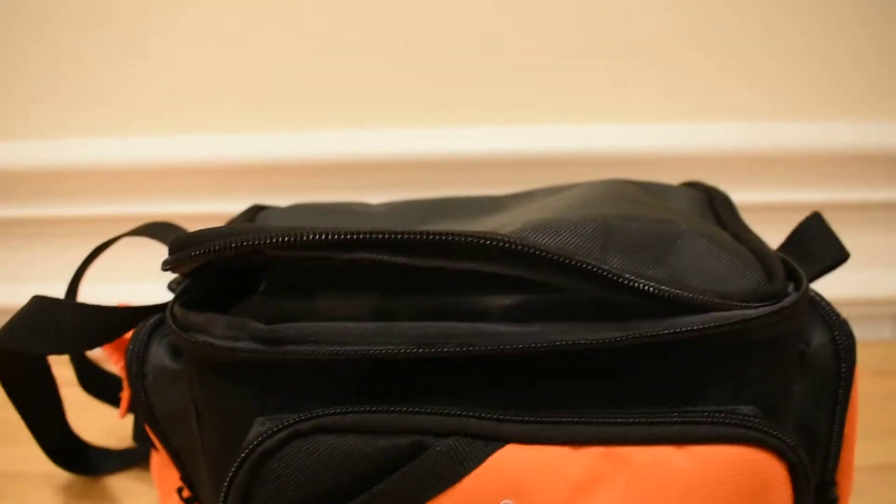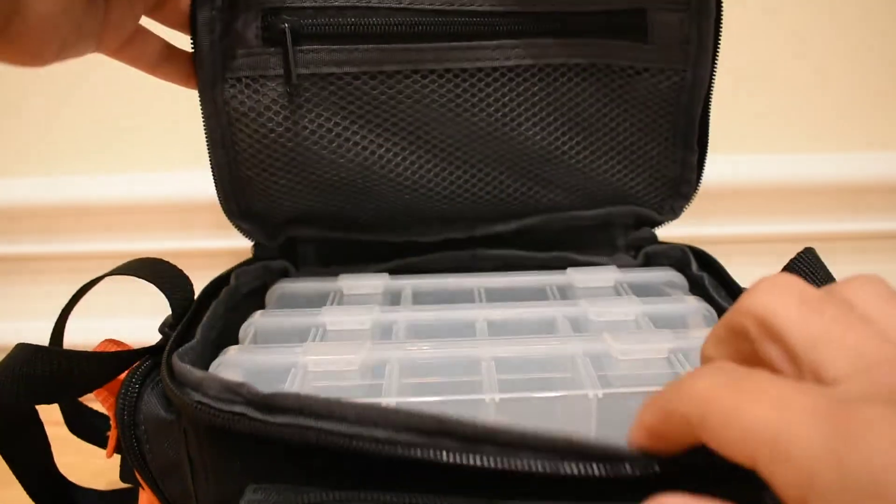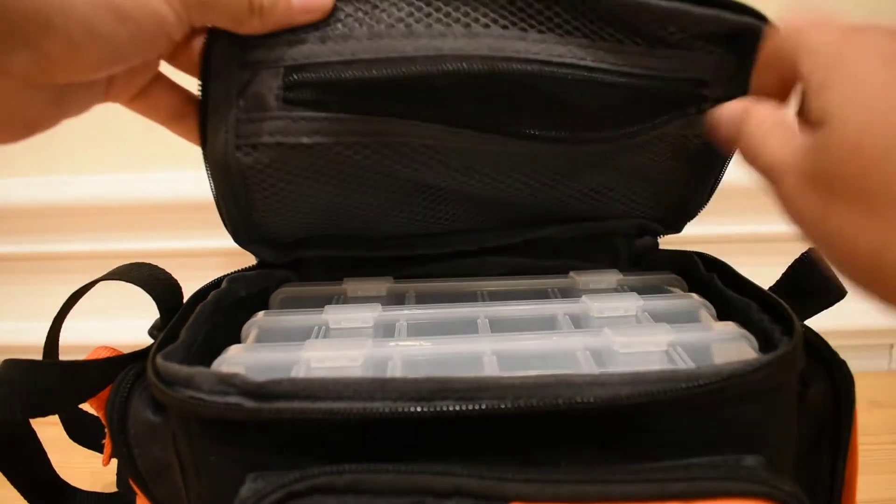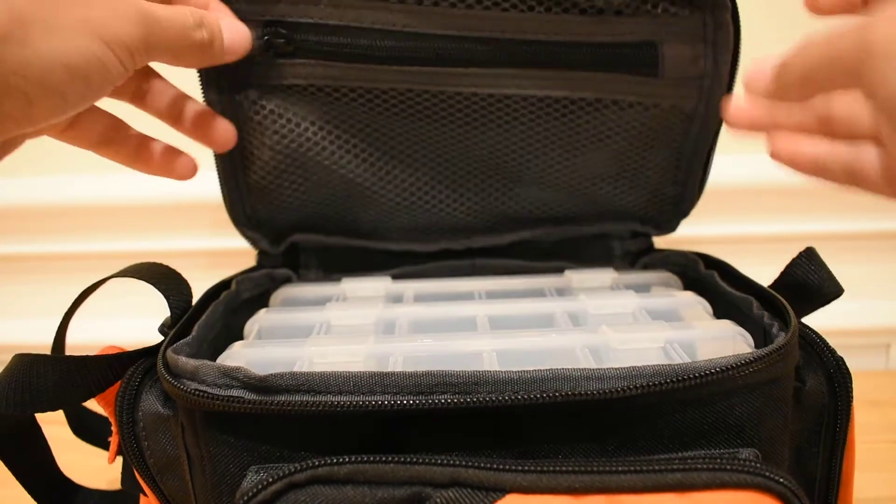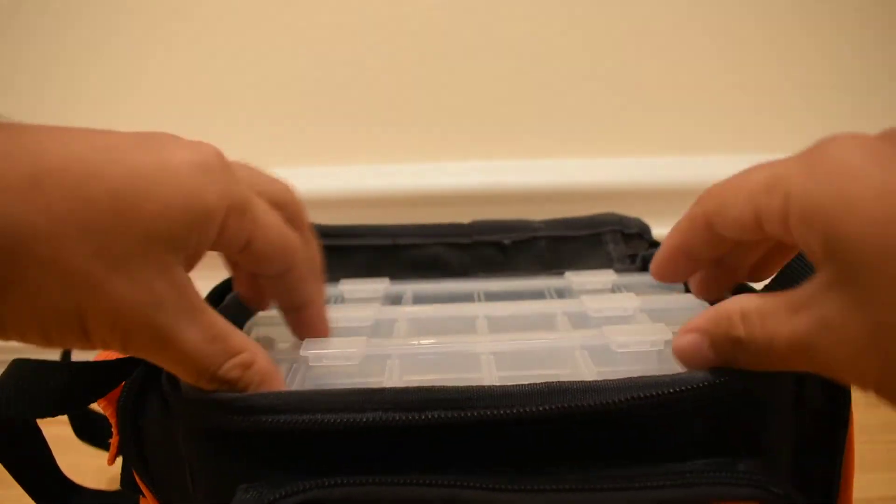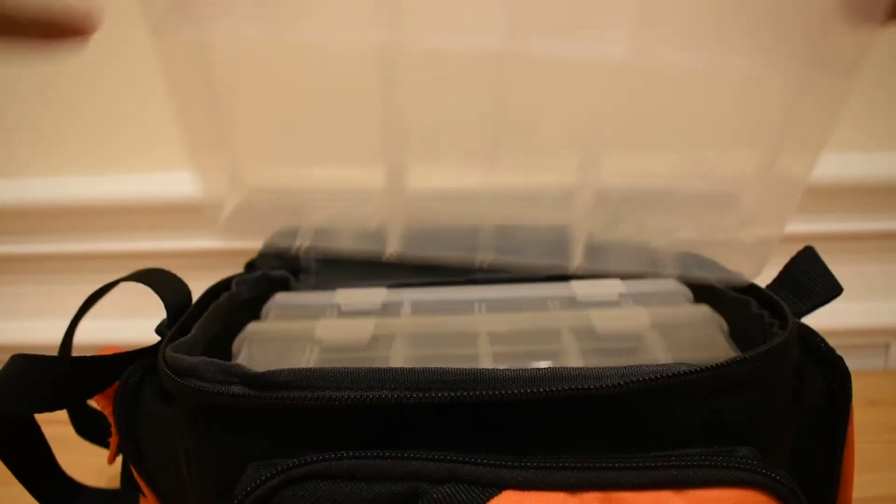Let me turn this camera up a little bit. Up here you got the zippered pouch. Pretty nice. You can put some extra packs of hooks, some lures, soft plastics. It comes with three boxes this size.